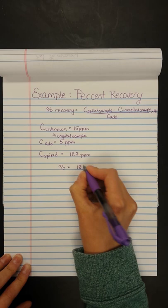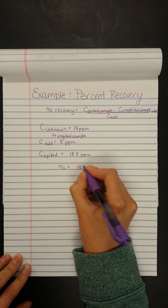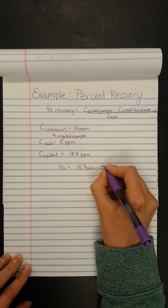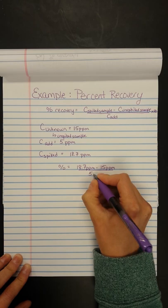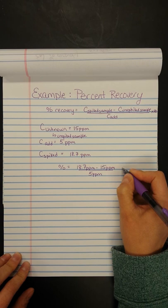Well, we take the concentration of our spiked sample, which we measure to be 18.7 ppm, minus the concentration of our unspiked sample, which we measure to be 15, and divide that or normalize it by the fortification concentration or the concentration of the spike, and then multiply by 100 to get percent. So let me type that into my calculator.